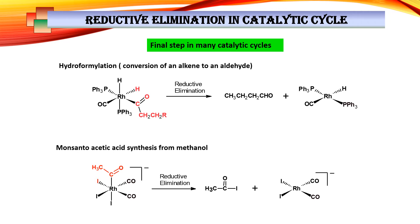Reductive elimination also takes part in various catalytic cycles, particularly in the final step when valuable organic components leave the catalytic cycle. For example, in hydroformylation, a C=O bond is formed and an aldehyde leaves the coordination sphere, reducing the coordination number and oxidation state. Similarly, in Monsanto acetic acid synthesis, an acyl group leaves the coordination sphere, lowering the oxidation state. Reductive elimination ultimately allows liberation of valuable organic components from the complex during catalytic processes.